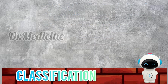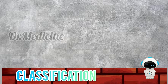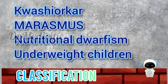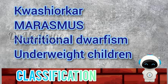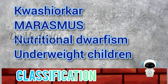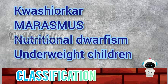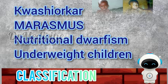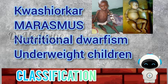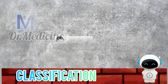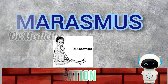Classification: The clinical presentation depends upon the type, severity and duration of the dietary deficiencies. The most common forms of protein energy malnutrition are marasmus, kwashiorkor, nutritional dwarfing and overweight of children. Of these four types, marasmus and kwashiorkor are the most common forms. In today's video, we will discuss about marasmus.